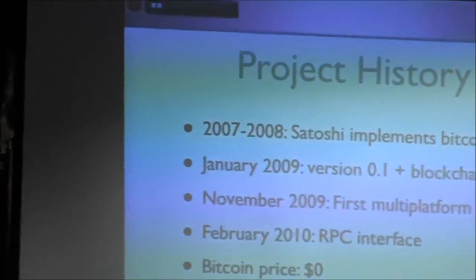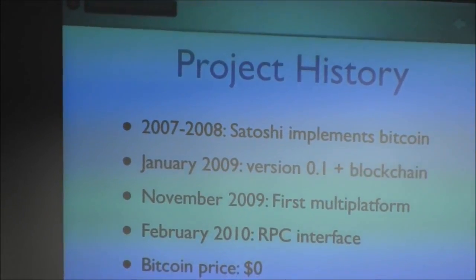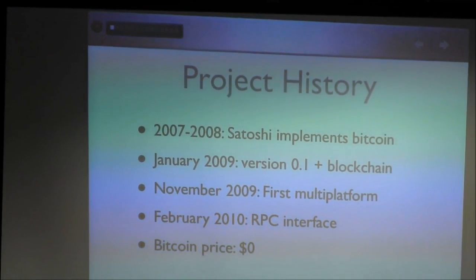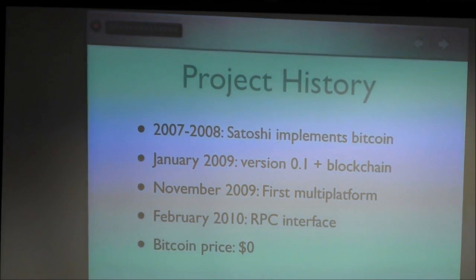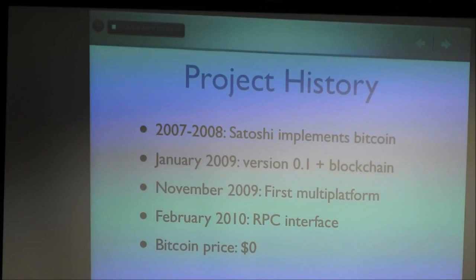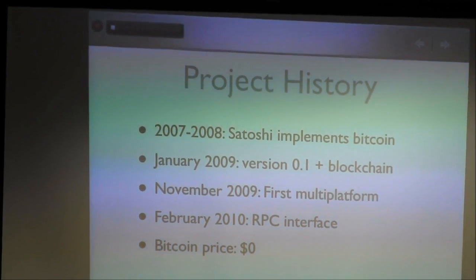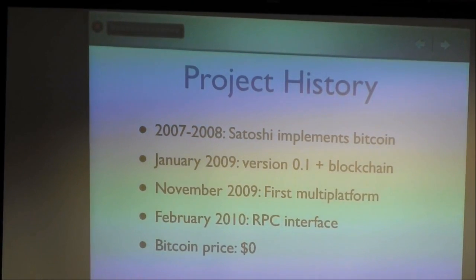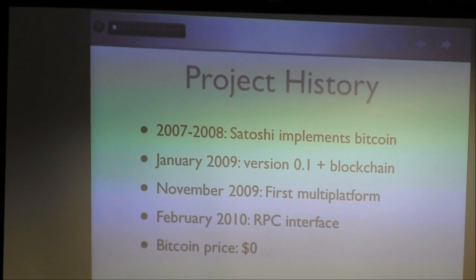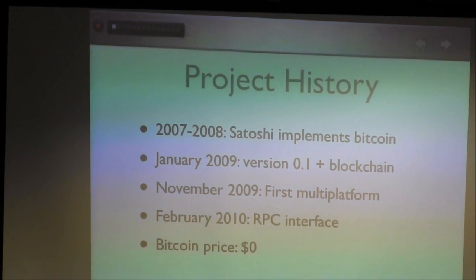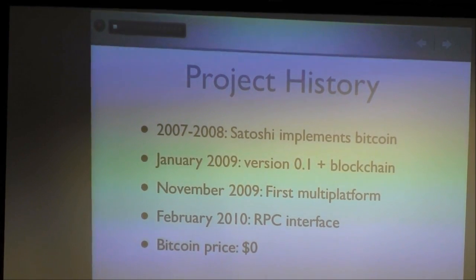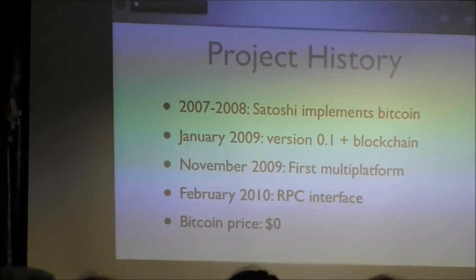As all of you probably know, Bitcoin was invented by Satoshi Nakamoto. He said it took him two years to do the initial implementation after he had his fantastic brainstorm on how to actually solve the double-spending problem. So if you work backwards, that means he started doing Bitcoin in 2007. In January of 2009, he released Bitcoin version 0.1 and started up the Bitcoin blockchain with the famous Genesis block.